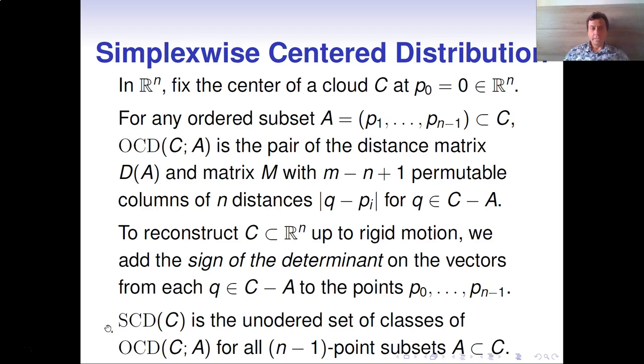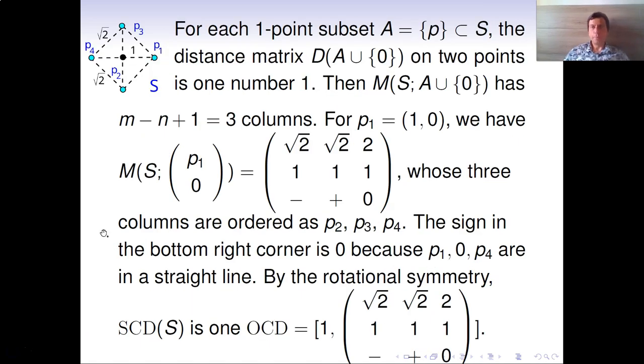Our main invariant, simplex-wise center distribution, is the unordered collection of classes of all these oriented center distributions for all n-1 point subsets considered up to permutations of these points. This slide shows a specific computation for a very simple cloud of four vertices of a square with the center of mass at the origin. In the plane, it suffices to fix only one extra point, for example P1 in our set, which in addition to the center of mass will give us the opportunity to uniquely represent the whole point cloud.